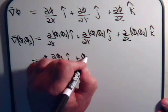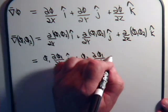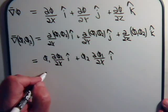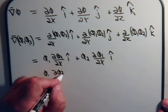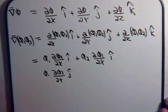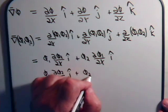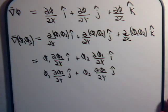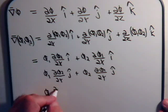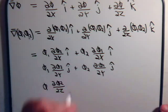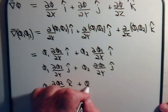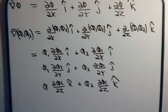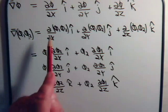...holding the other constant, we're going to have the partial of p1 with respect to x times the i unit vector. For the y terms we get p1 times the partial of p2 with respect to y times j, plus p2 times the partial of p1 with respect to y times j. And for the last term, p1 times the partial of p2 with respect to z times k, plus p2 times the partial of p1 with respect to z times k.